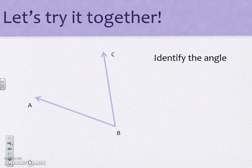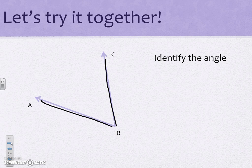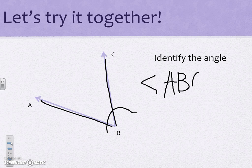Let's try one together. We first want to look at the common point where the two lines meet which is B. That we know needs to go in the middle and then generally go in alphabetical order. So when we're looking at this angle we're going to label it ABC.